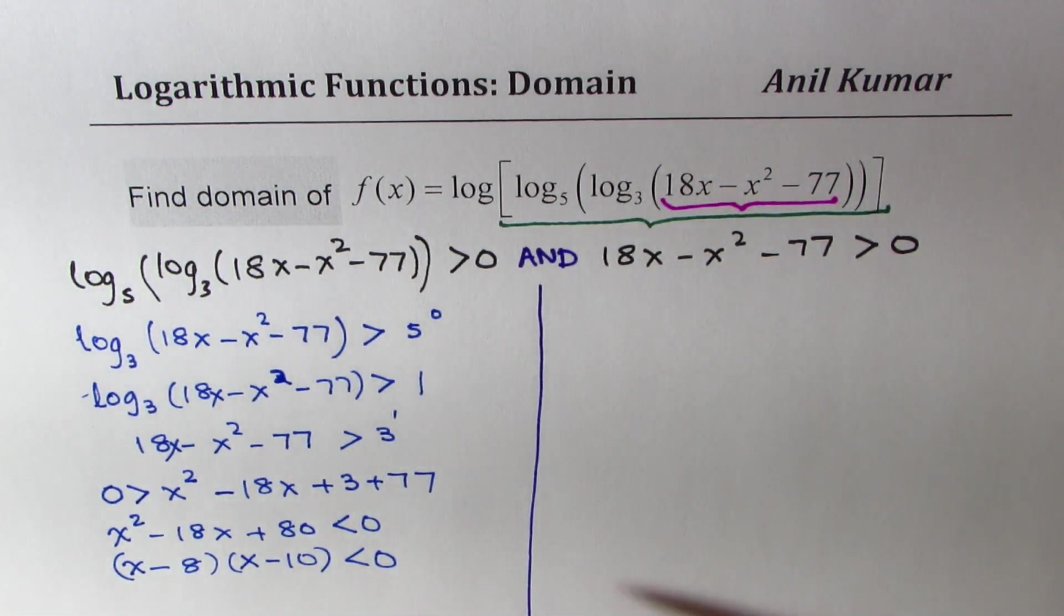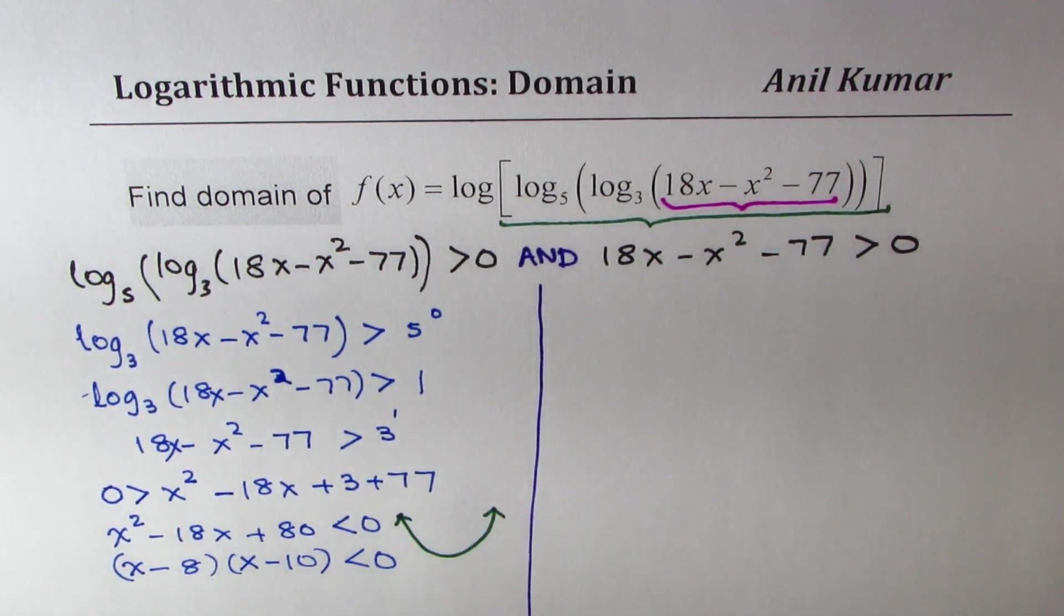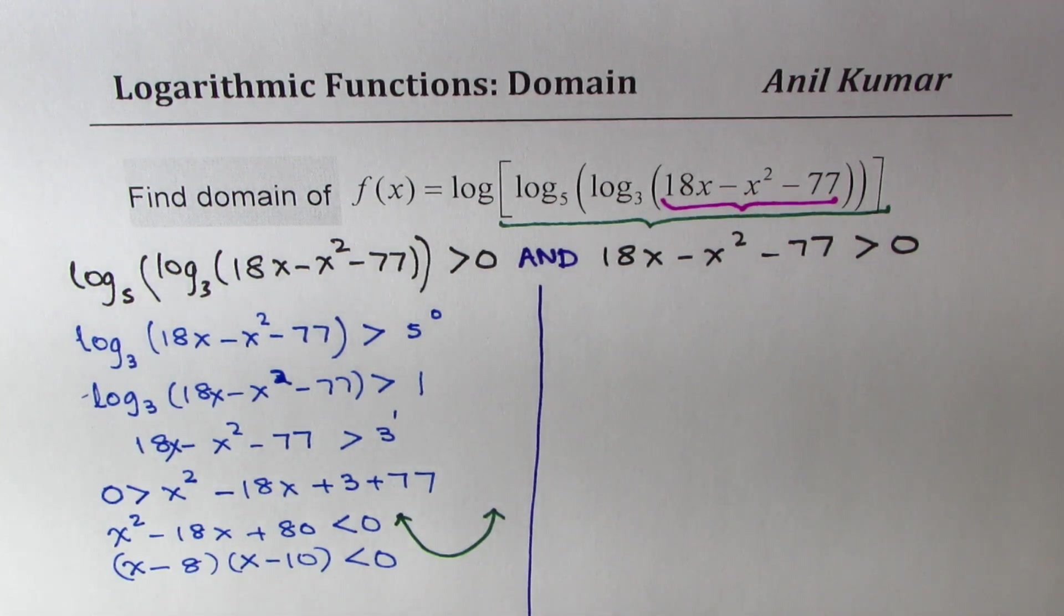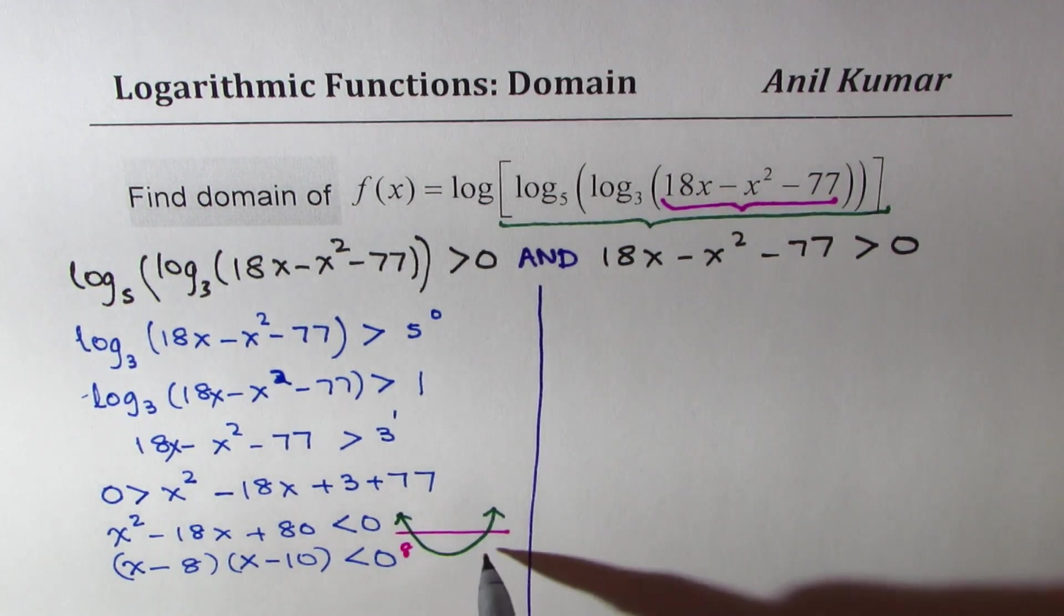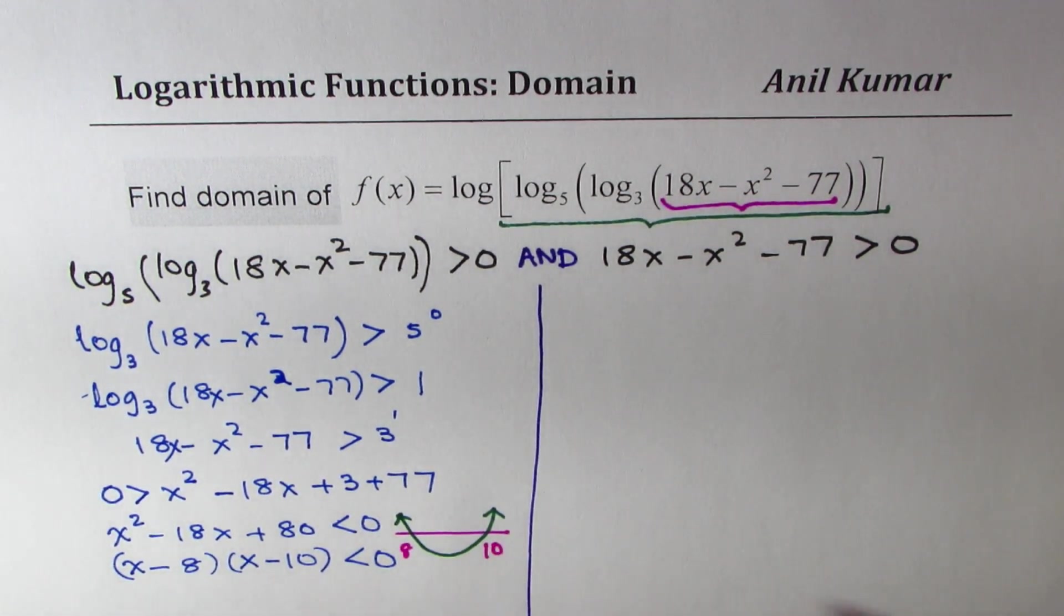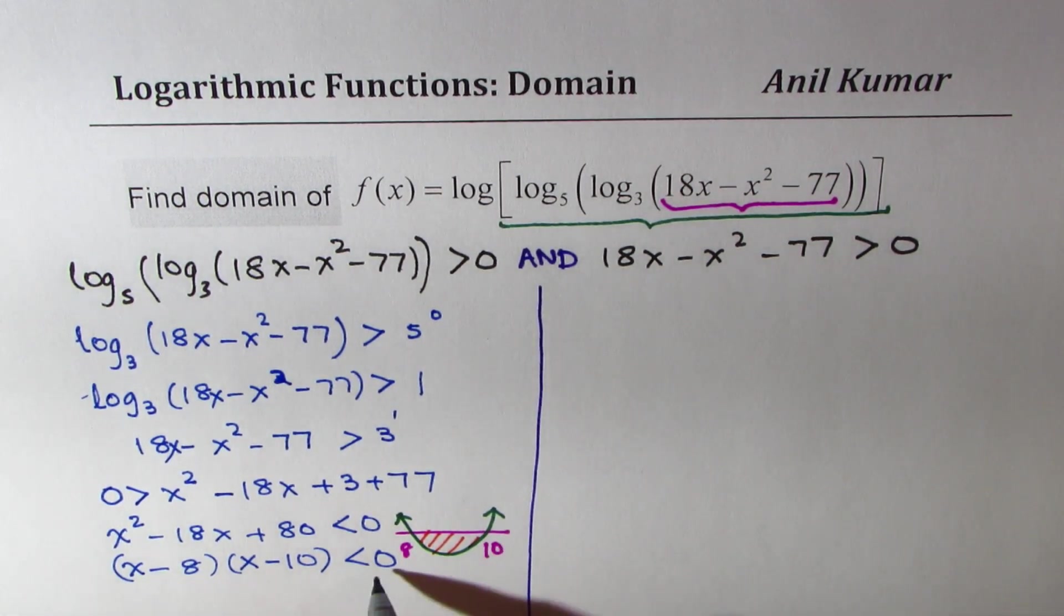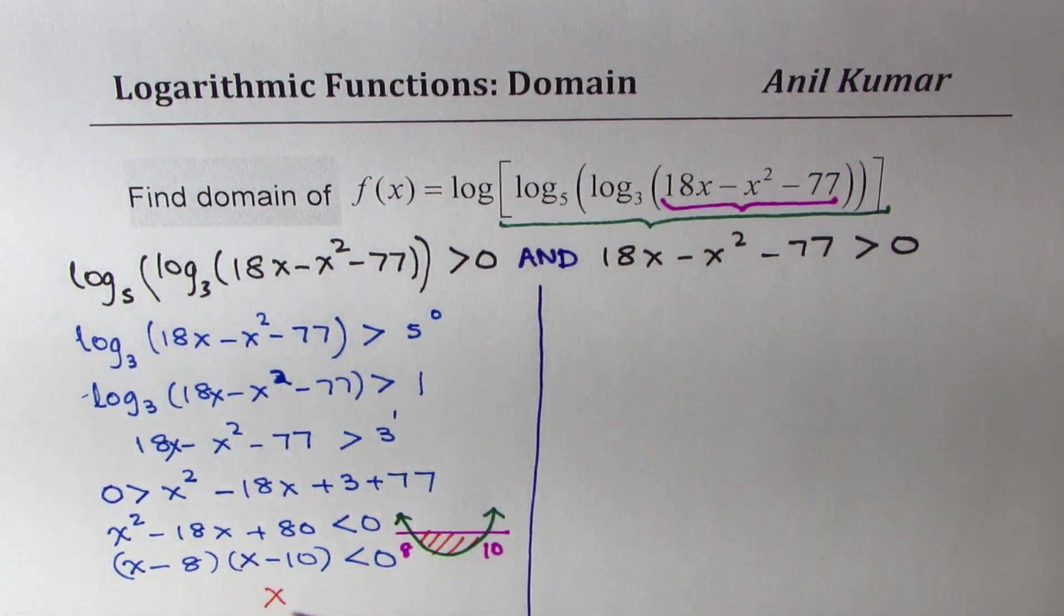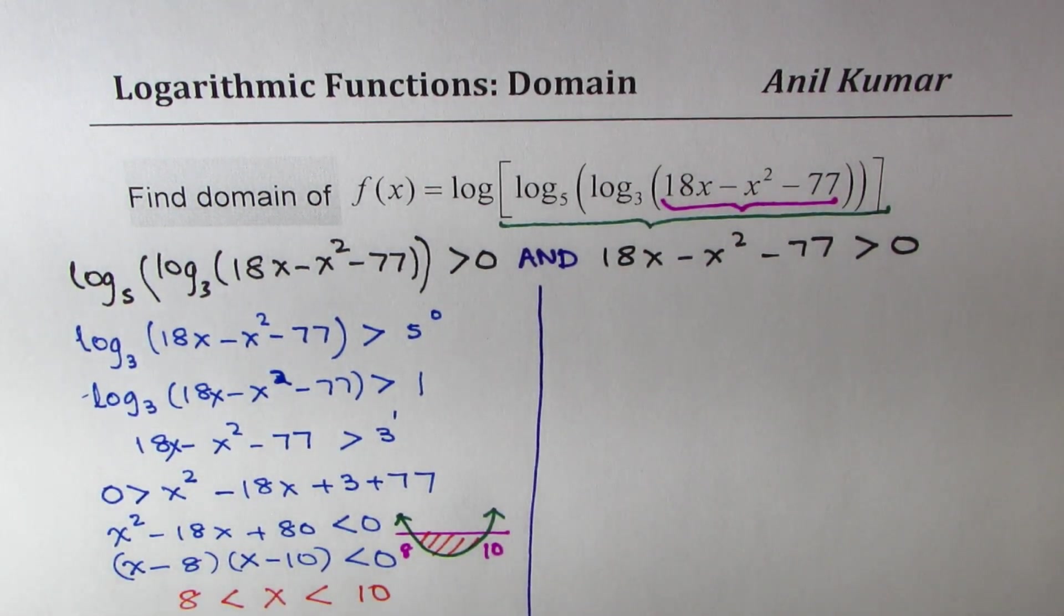When is it less than 0? It's a quadratic function, a parabola like a happy face, with zeros at 8 and 10. It is negative when x is between 8 and 10. That's the part we're looking for, where it's negative. So from here, we get the condition that x is between 8 and 10. Perfect. That is one condition.